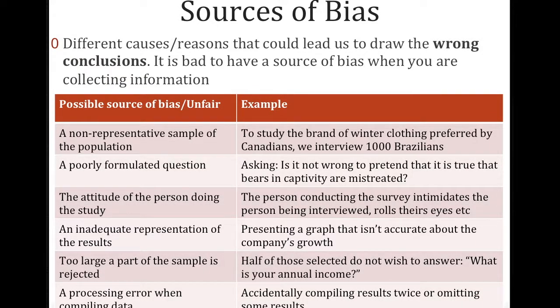So one first possible source of bias or something that will make our sample unfair is a non-representative sample of the population. So the example is to study a brand of winter clothing preferred by Canadians and we interview 1,000 Brazilians. So you can understand why that may not make sense and it could be unfair or not accurate. So we say this is a source of bias.